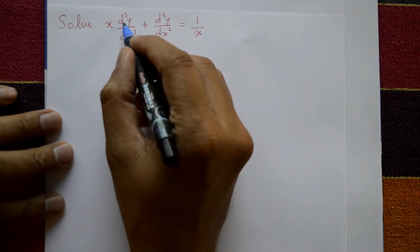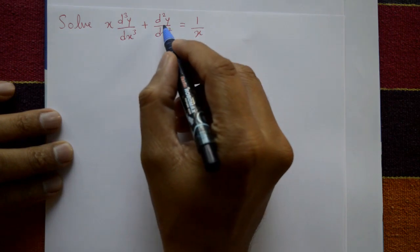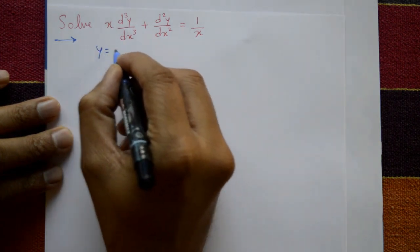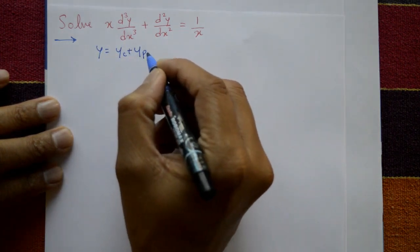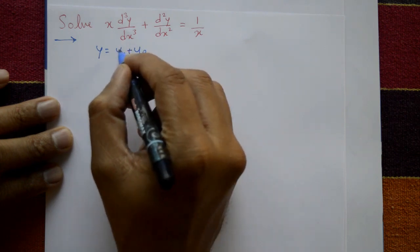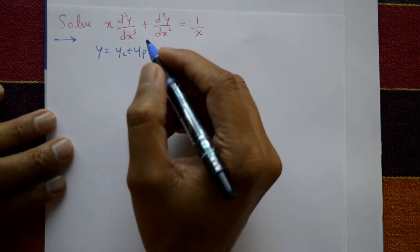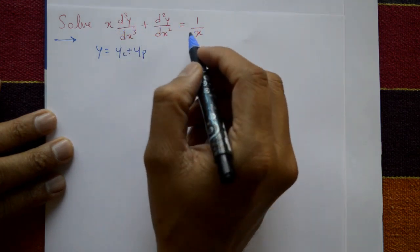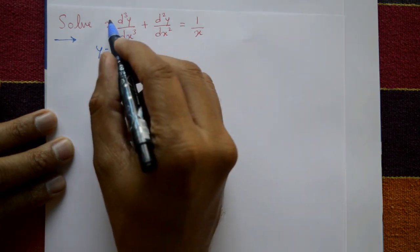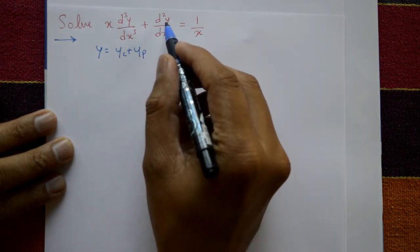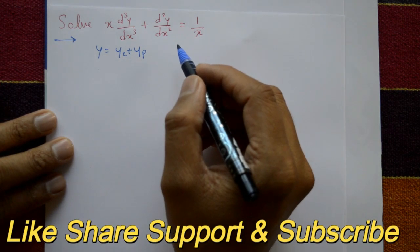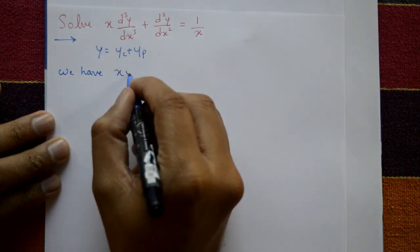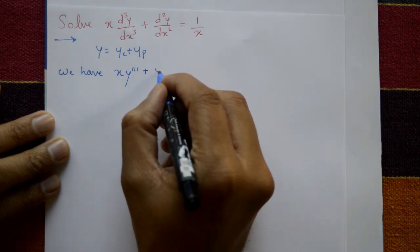Solve x·y''' + y'' = 1/x. Find the complete solution, which means y equals complementary function plus particular integral. This is a Cauchy-Euler equation — it is not in general form, so we need to convert it. The general Cauchy-Euler form requires x³y''', x²y'', xy' terms.